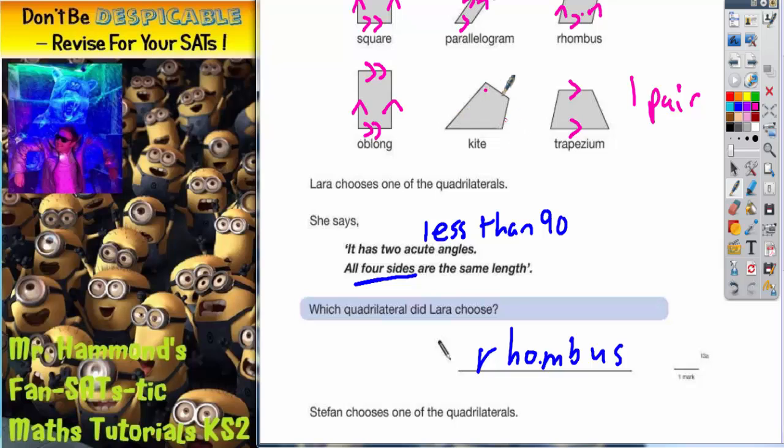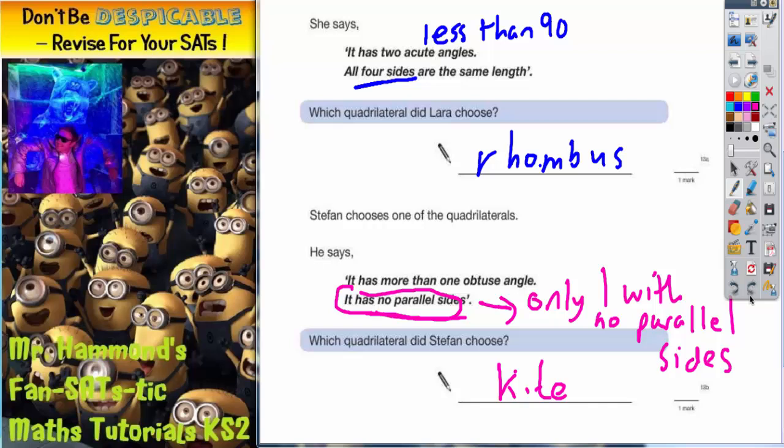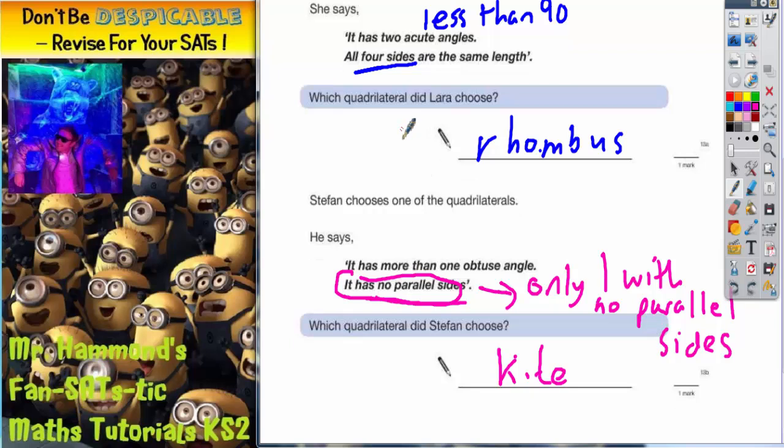That angle is obtuse bigger than 90. That's bigger than 90. And that's bigger than 90. So actually, it's got three obtuse angles. So the final answer is on the first part, Laura chose rhombus. And on the second part, she must have chosen a kite.